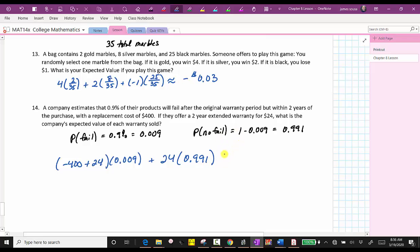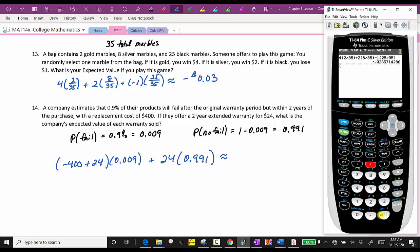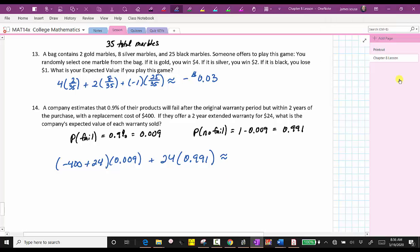And now we go back to the calculator and round to the nearest cent. We have negative 400 plus 24 in parentheses times 0.009, which gives us exactly 20.4 or $20 and 40 cents.